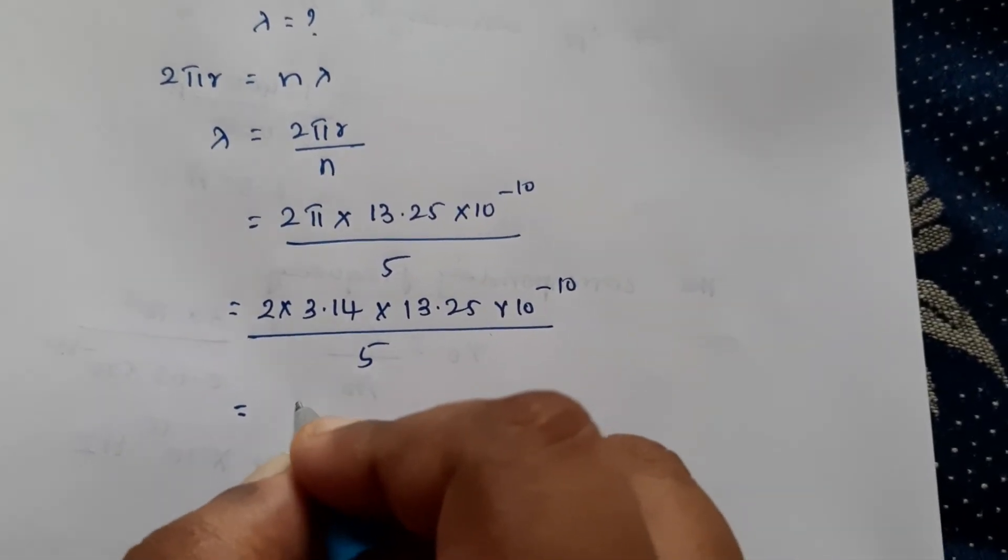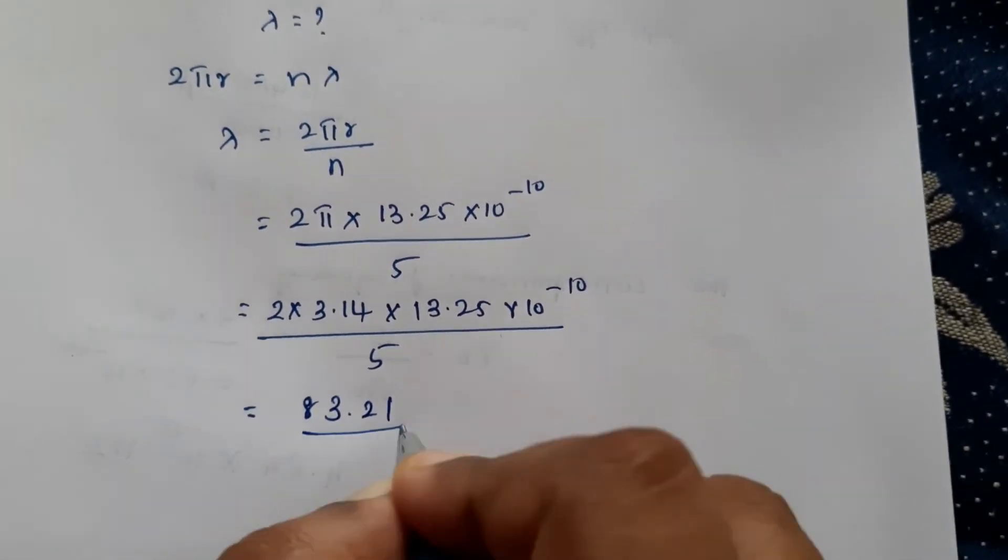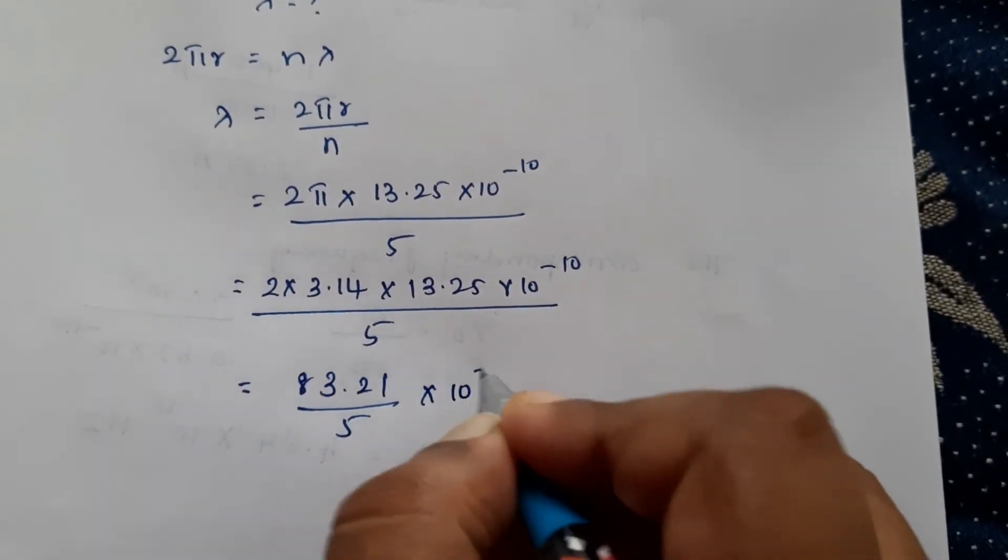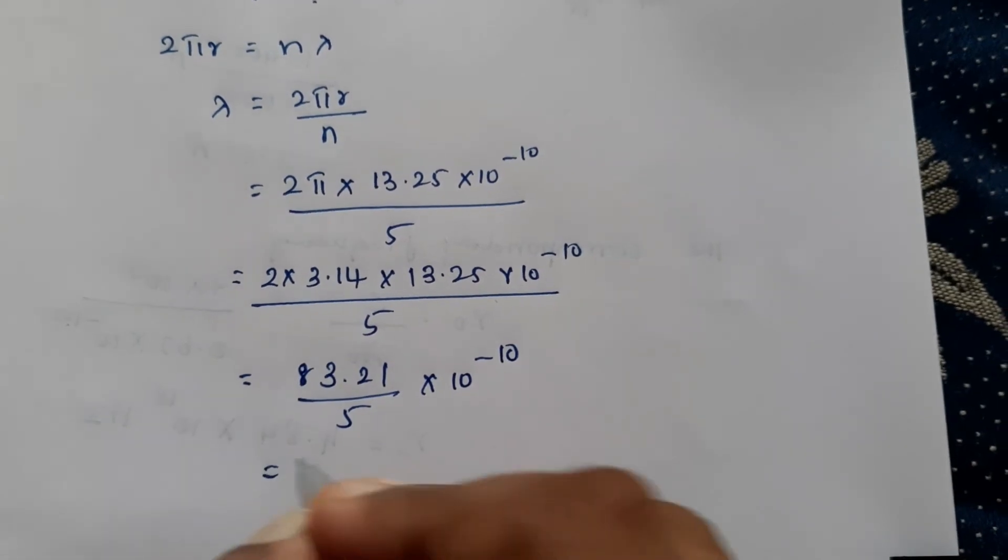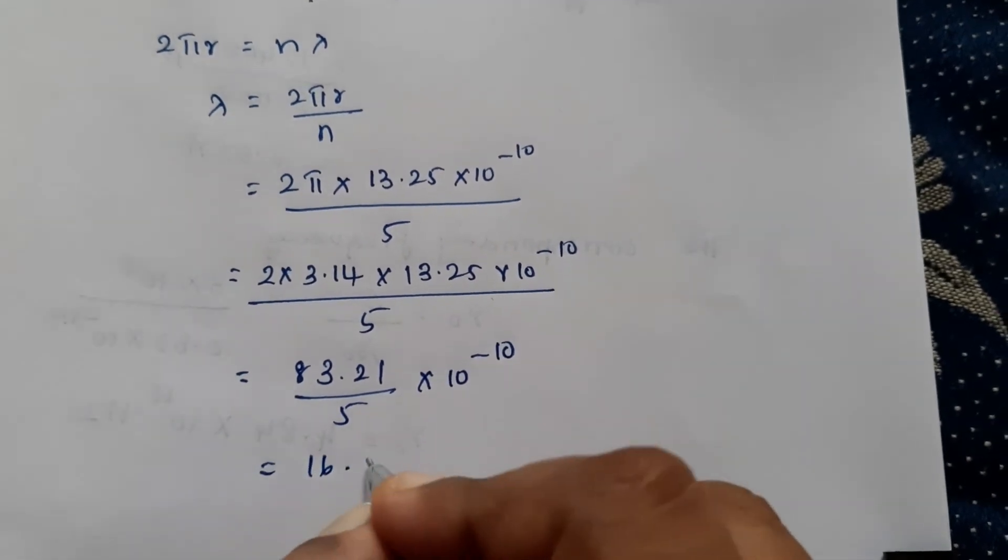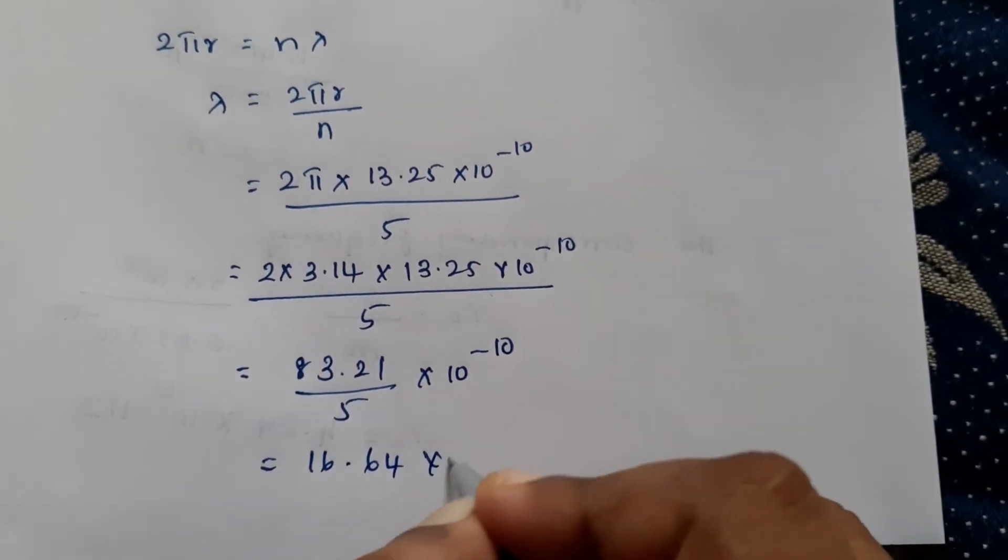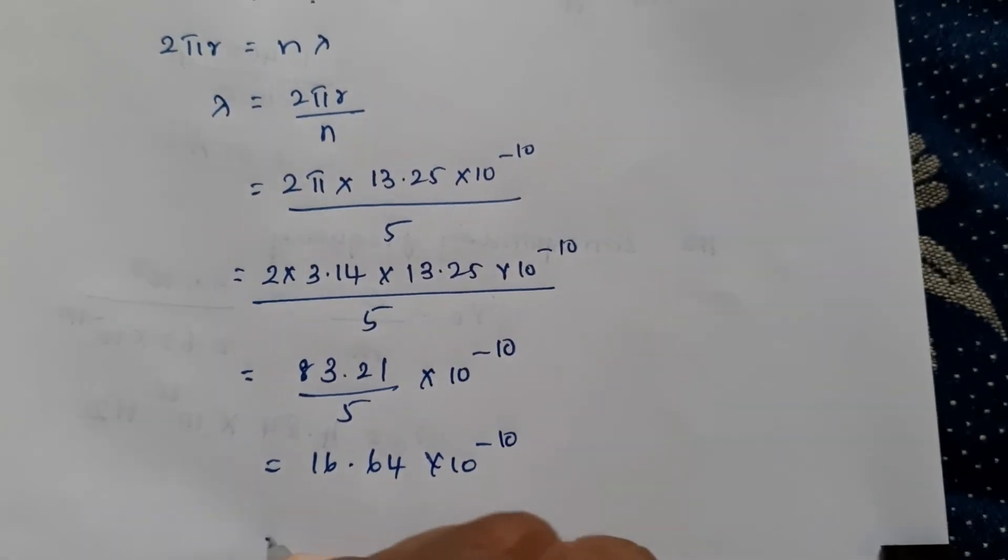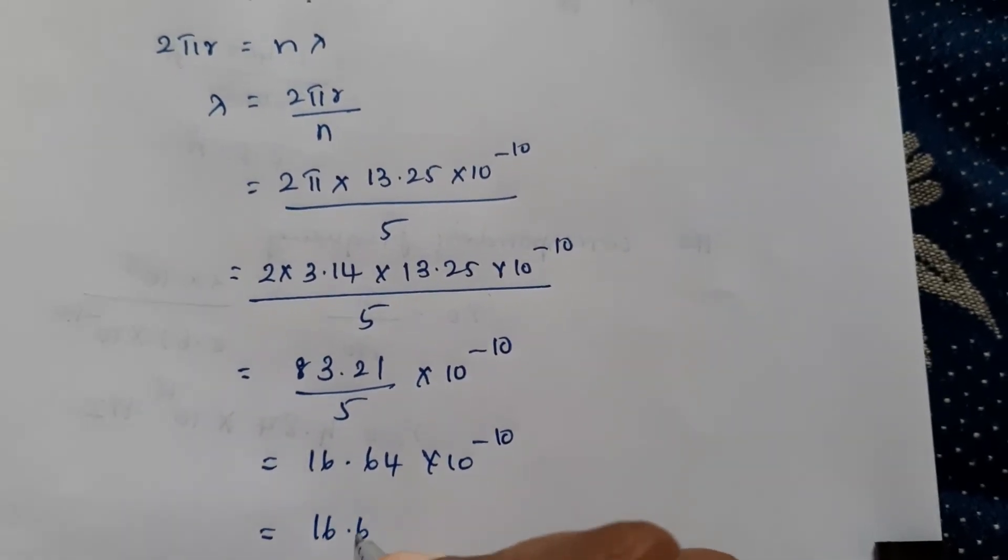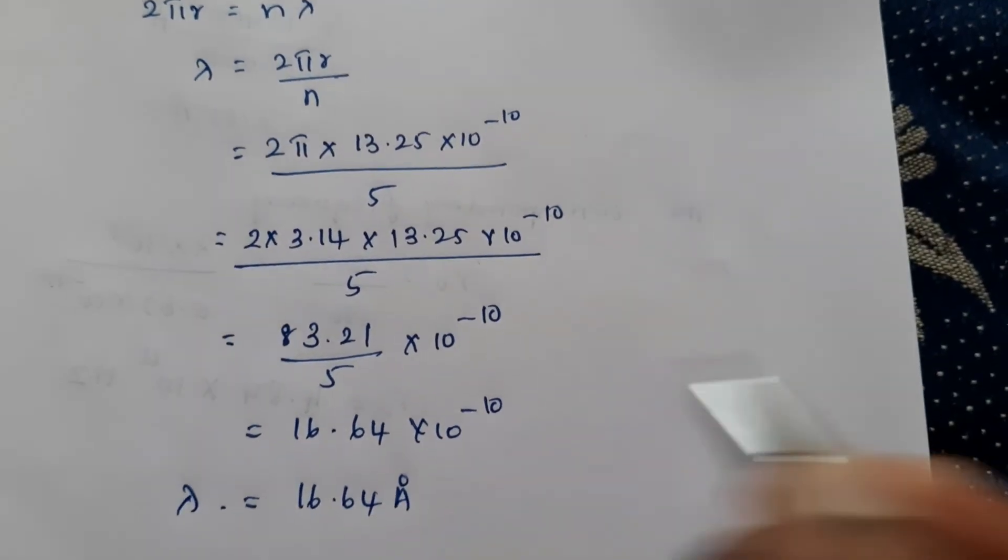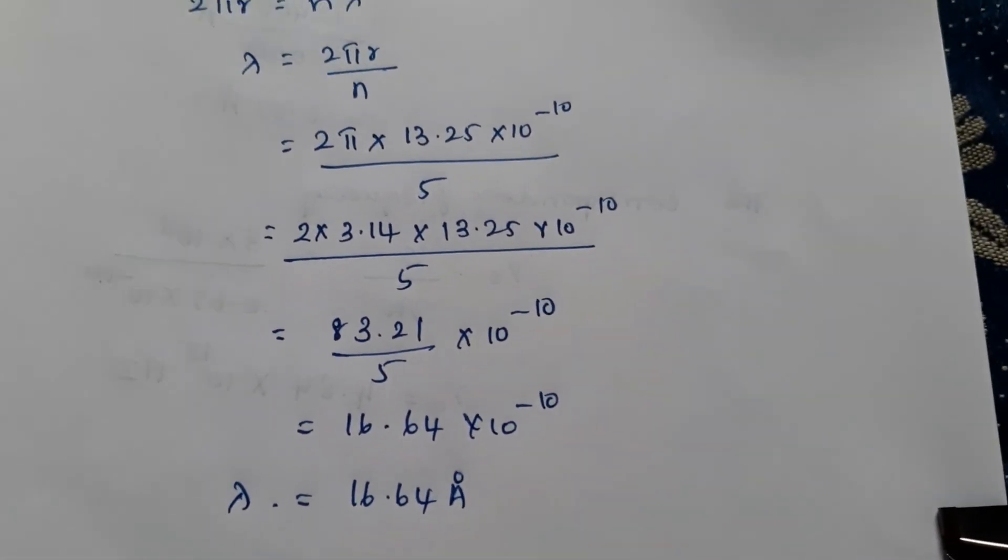It is 83.21 by 5 into 10^-10, which equals 16.64 into 10^-10. That can be written as 16.64 Angstrom. This is the value of the wavelength.